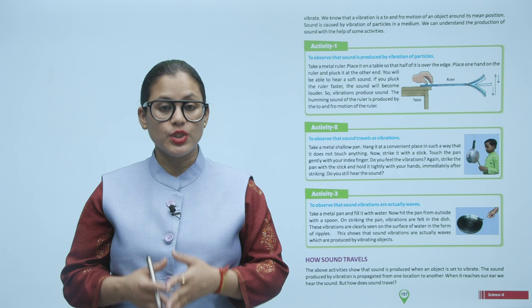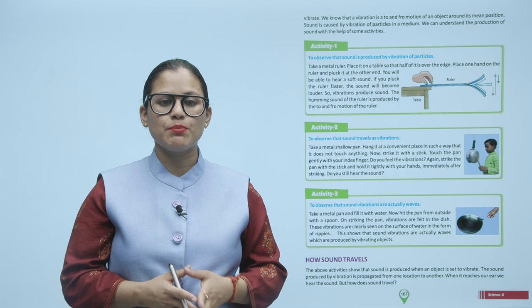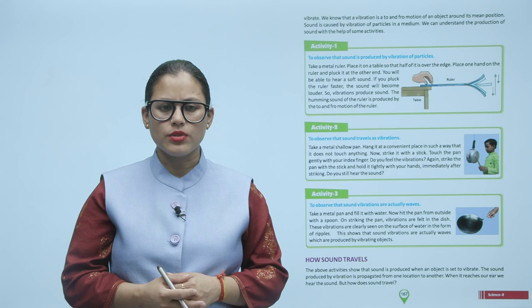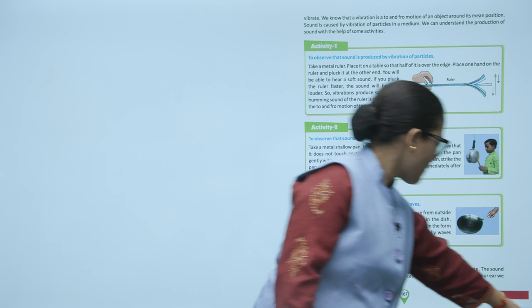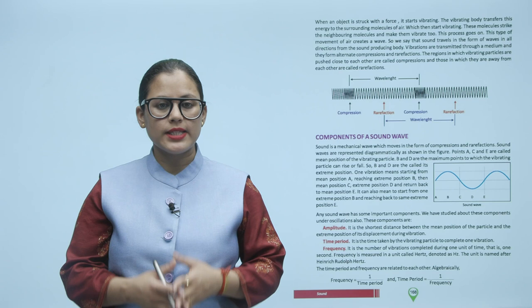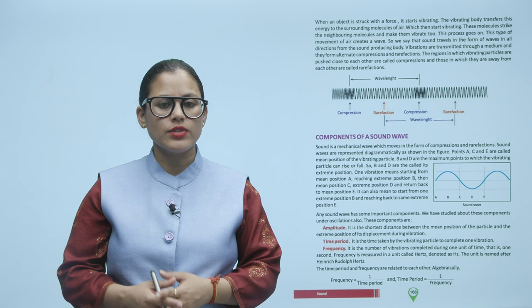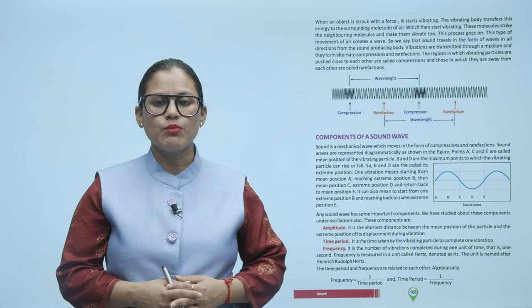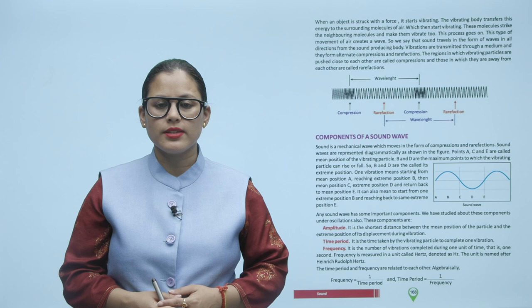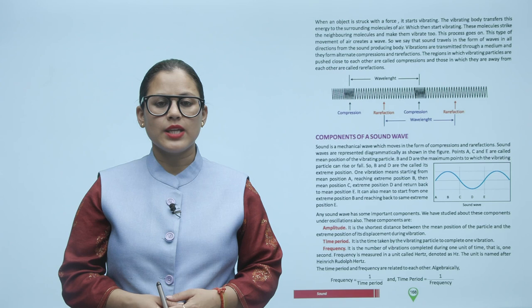How does sound travel? When an object is set to vibrate, the sound produced is propagated from one location to another. When it reaches our ear, we hear the sound. When an object is struck with a force, it starts vibrating. The vibrating body transfers this energy to the surrounding molecules of air, which then start vibrating. These molecules strike the neighboring molecules and make them vibrate too. This type of movement of air creates a wave — sound travels in the form of waves in all directions from the sound-producing body.